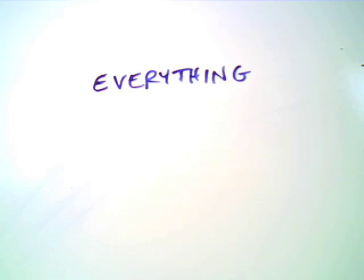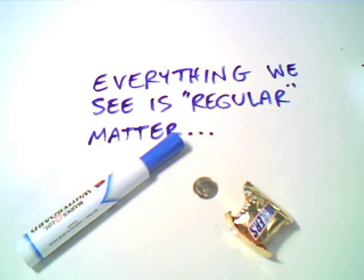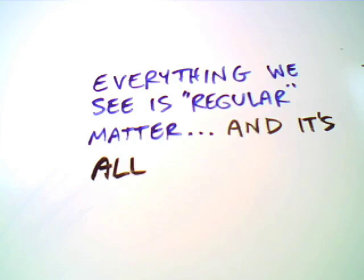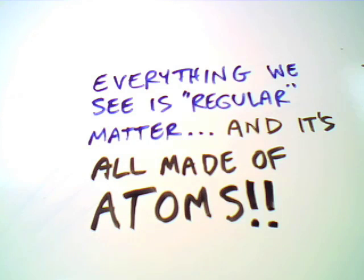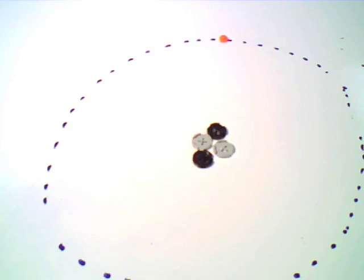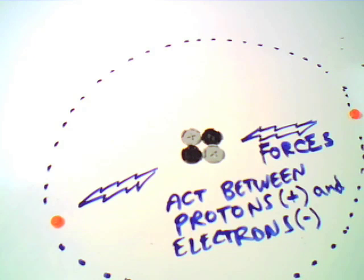So what do I mean by regular matter? Well everything we experience every day, such as this pen, this dime, candy bars, you, me, everything is regular matter. It's all made of atoms. So atoms, as you might remember if you were paying attention in chemistry class, are made up of positively charged protons and uncharged neutrons (not the same as a neutrino) that make up the nucleus of the atom. And then electrons with a negative charge go around in an orbit around the nucleus. Now because of these positive and negative charges, there's forces that act between the protons and the electrons to hold the whole atom together.